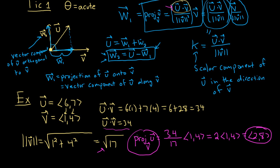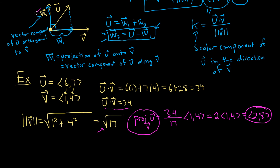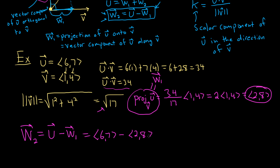If we wanted to find the vector component of u orthogonal to v — that's w2 — we use w2 = u minus w1. Since u is (6, 7) and w1 is (2, 8), subtracting gives us 6 minus 2 equals 4, and 7 minus 8 equals negative 1. So w2 is (4, -1), the vector component of u orthogonal to v. I hope this video has been helpful.